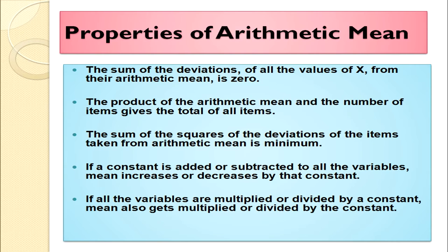Fourth: if a constant is added or subtracted from all variables, the mean also increases or decreases by that constant. Fifth: if all variables are multiplied or divided by a constant, the mean also gets multiplied or divided by that constant. Students, we have learned about the properties of arithmetic mean and how to calculate mean in all series by all methods. Thank you.